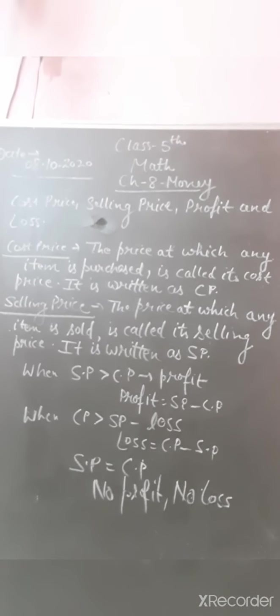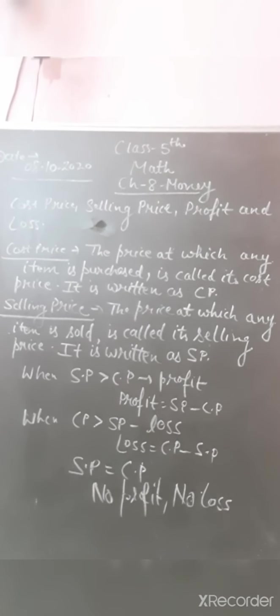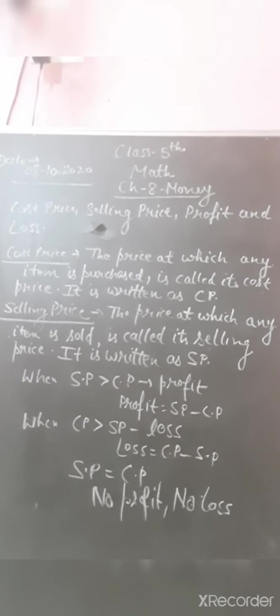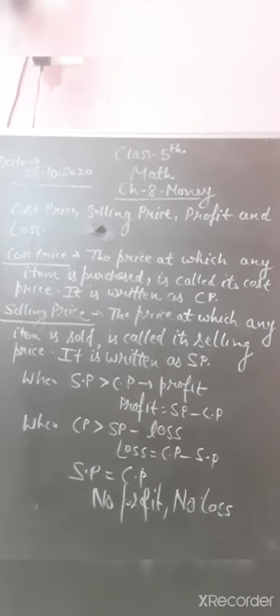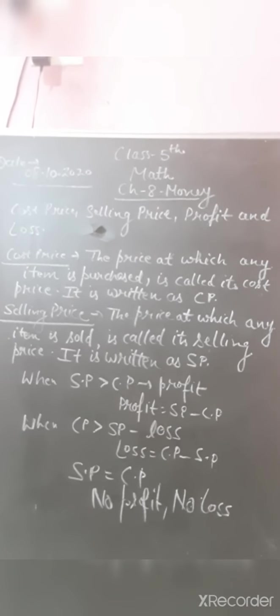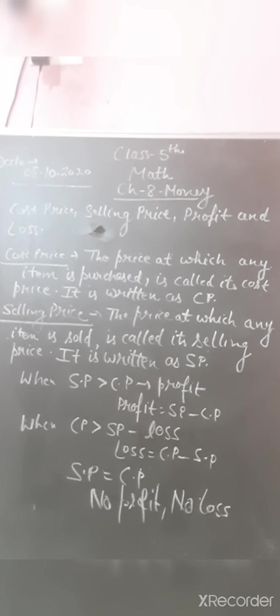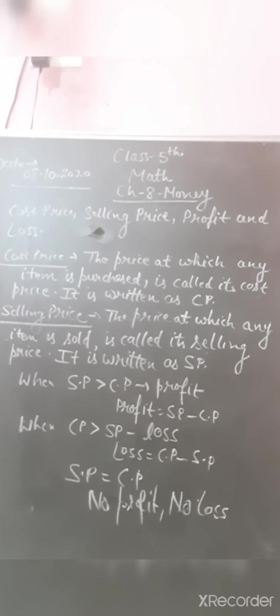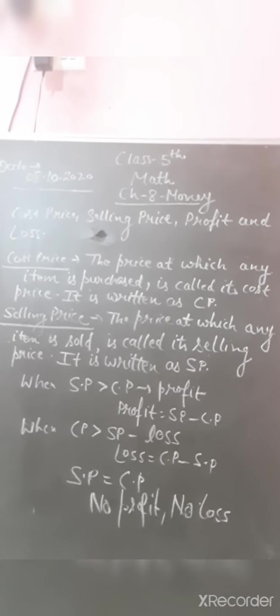If whatever I have purchased I give to someone else and I take money in return — charging more than the price at which I purchased — that price is called the selling price. It is written as SP.